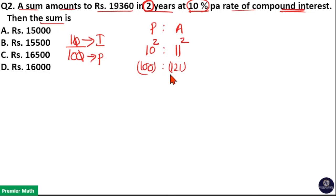That means 100 is to 121 is for 2 years. Now, here it is given that amount is 19,360 in 2 years.